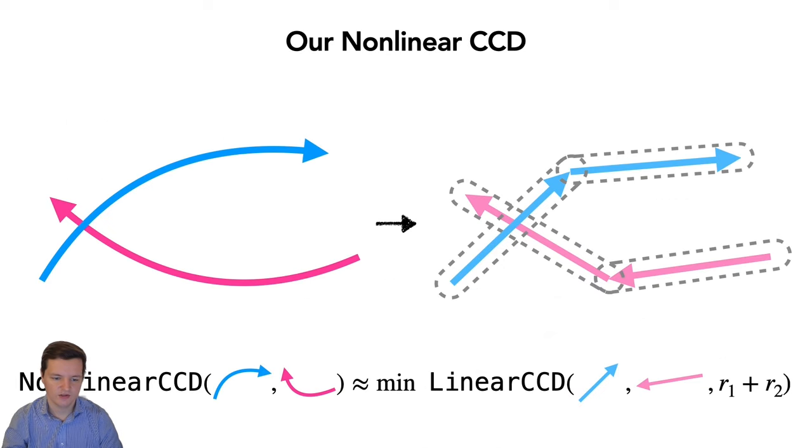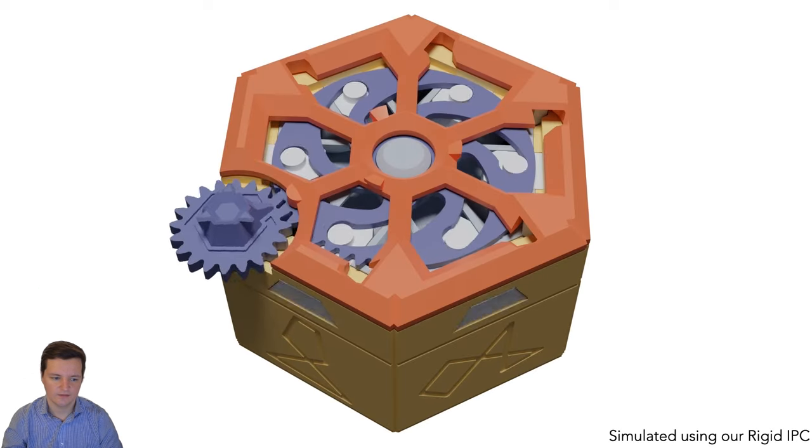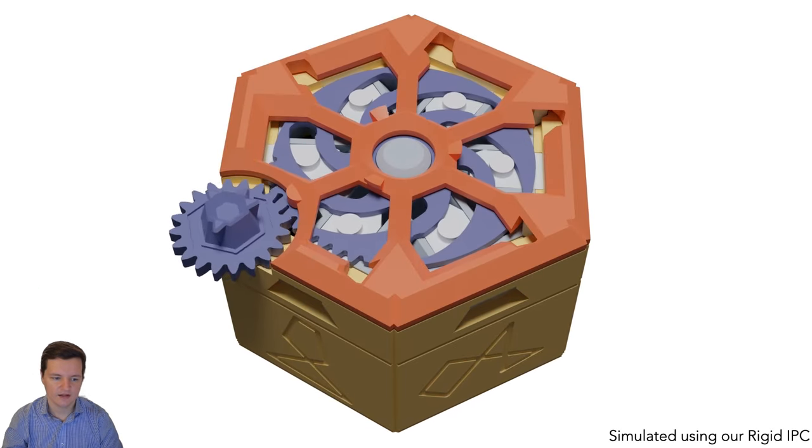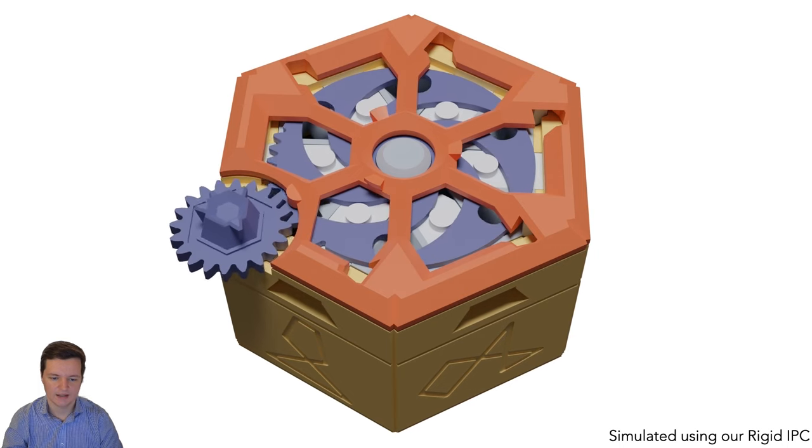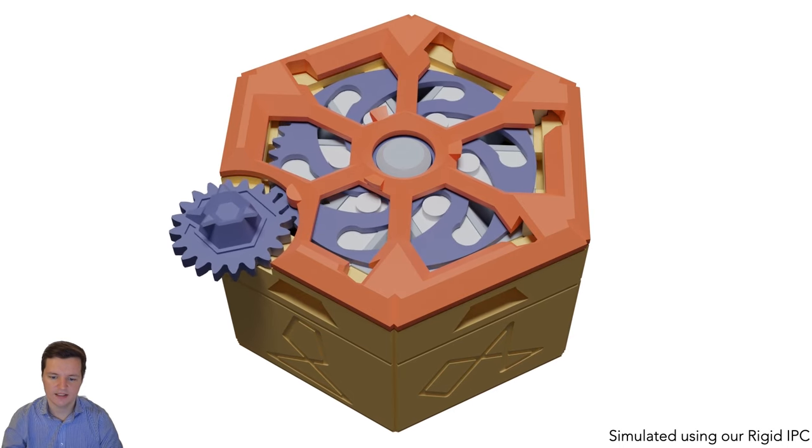Following these two works, we introduced rigid IPC, a new method for performing CCD of non-linear trajectories. This allowed us to simulate complex rigid mechanics like this lockbox, all while guaranteeing no intersections occur.